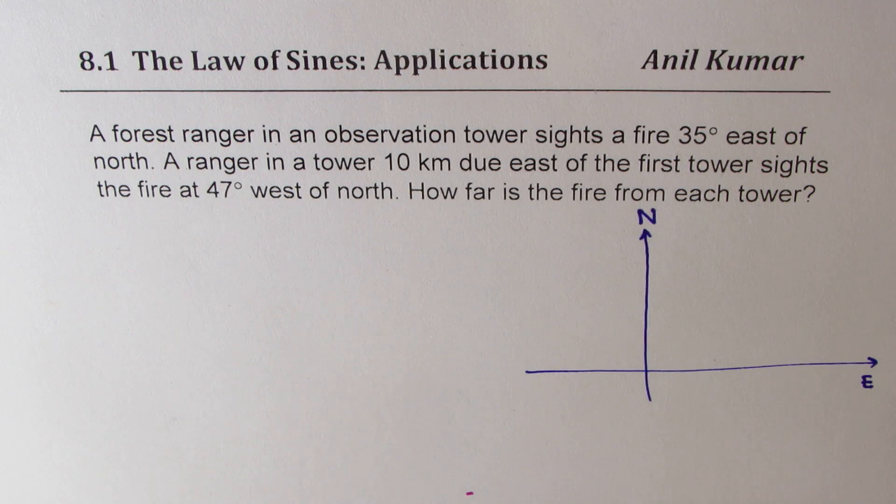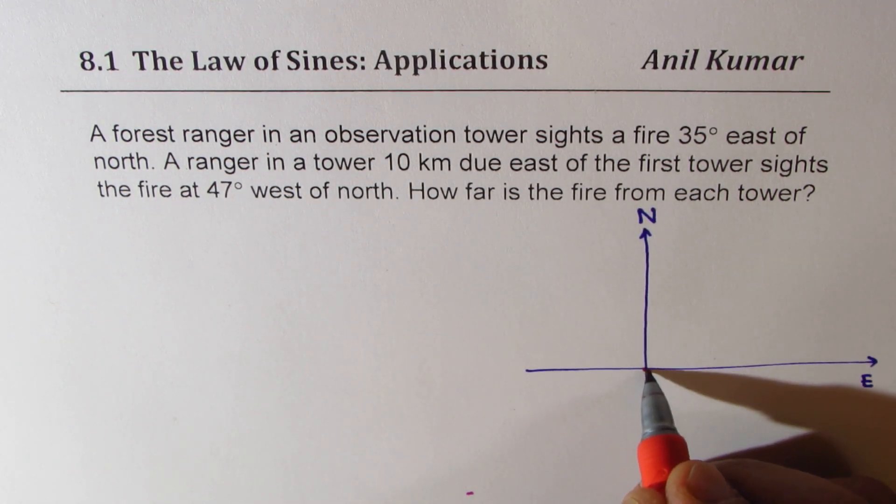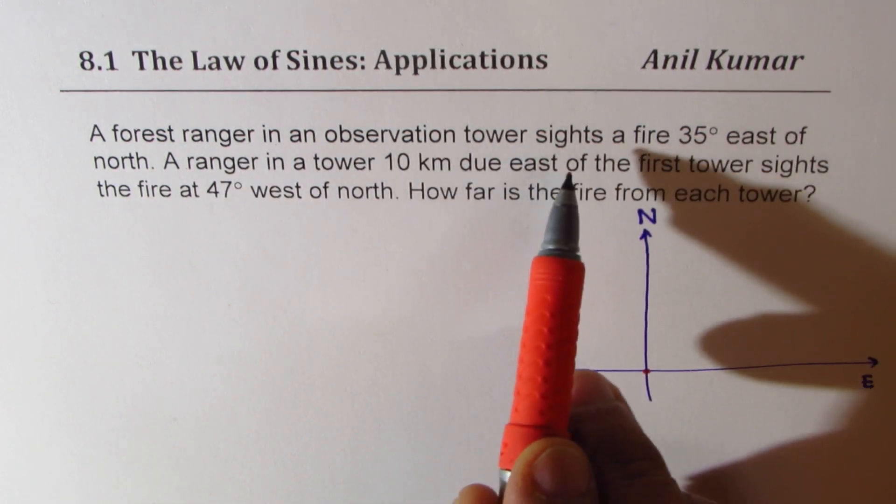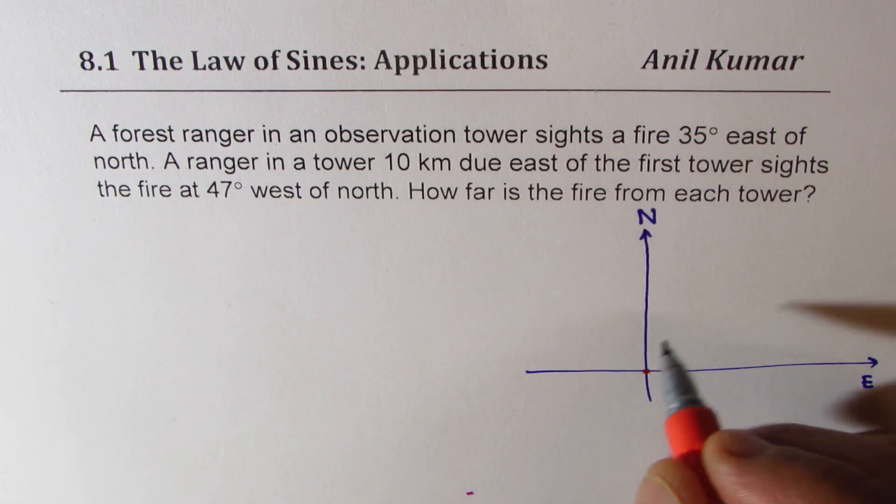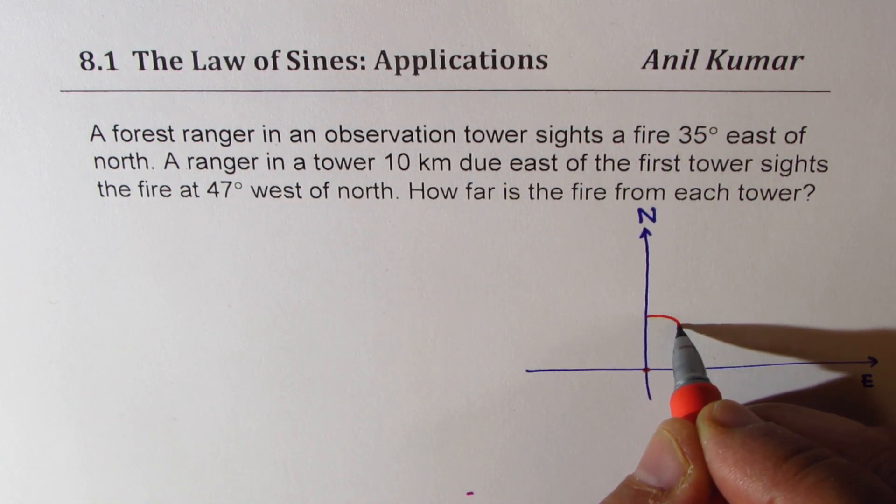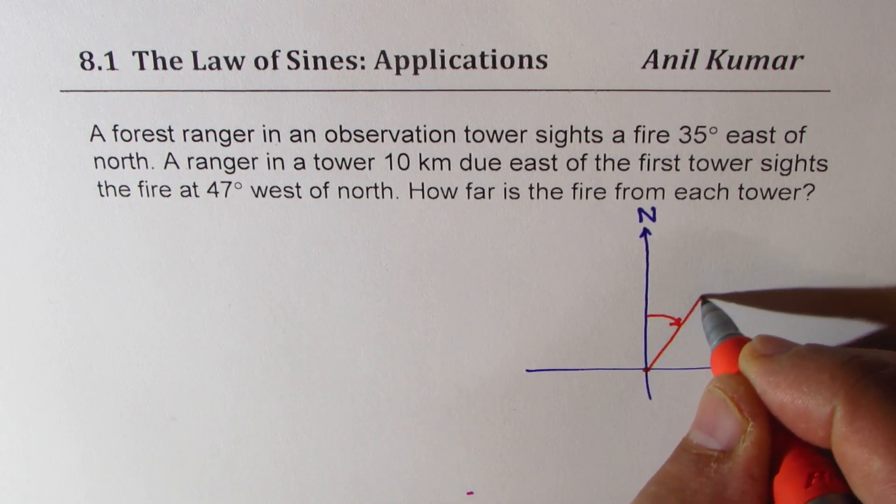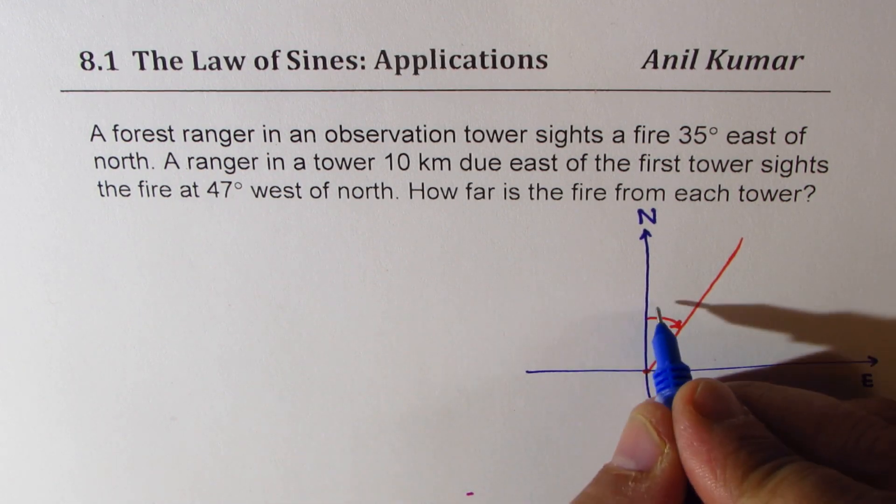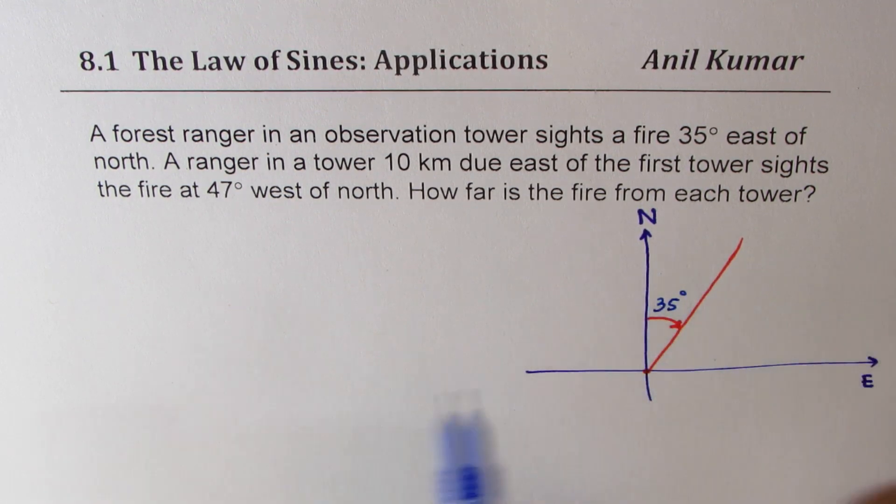We are given that one of these towers, we'll assume it right here. A forest ranger in an observation tower sights a fire 35 degrees east of north. So that means from here it is 35 degrees. So this is in that direction and the angle here is 35 degrees from the north towards east.